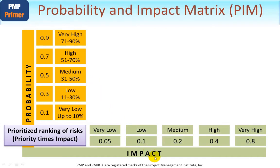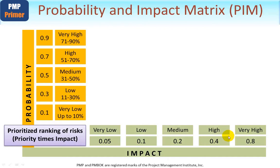Looking at impact, the descriptions remain the same — very low, low, medium, high, and very high — but the scale is slightly different, starting at 0.05. The reason is that for an average risk where both probability and impact are 50% (0.5), probability scores as medium, but 0.5 on the impact scale falls between high and very high. Impact is treated as a more severe metric, so its values are skewed to make a given number register higher than it would on the probability scale.